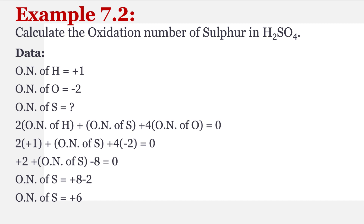Ab isko formula ki form mein likhenge: two atoms of hydrogen are there in H2SO4, is wajah se two multiplied by oxidation number of hydrogen, plus oxidation number of sulfur, plus — yahan pe four atoms hain oxygen ke, is wajah se — four multiplied by oxidation number of oxygen, is equal to zero, kyunki yeh neutral molecule hai.